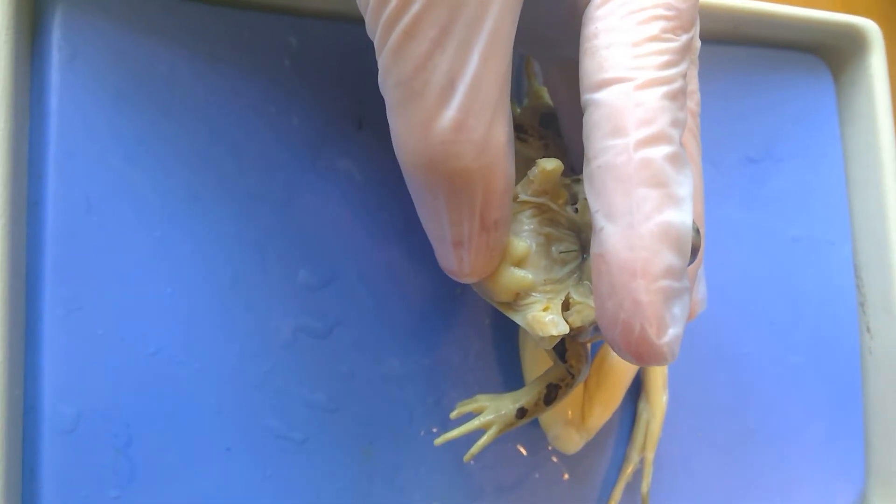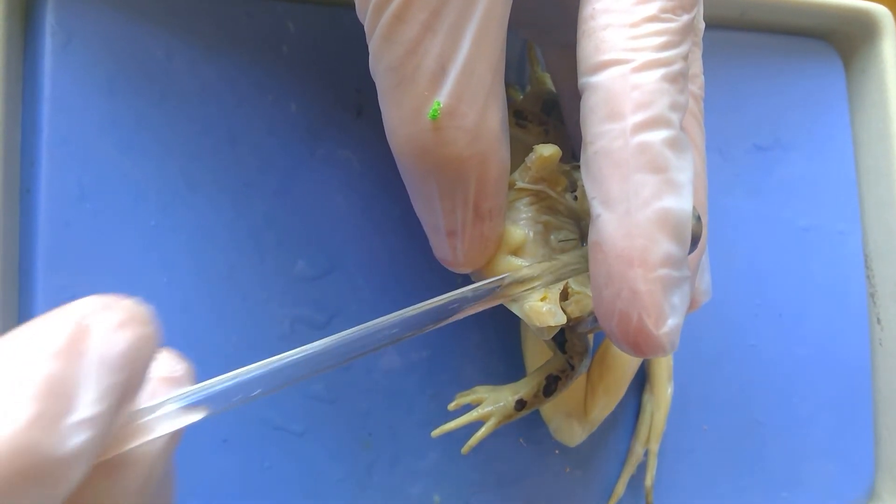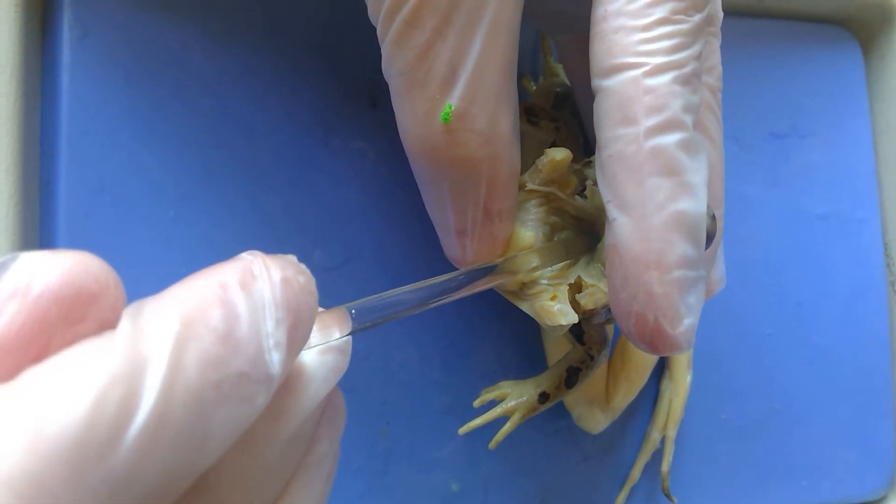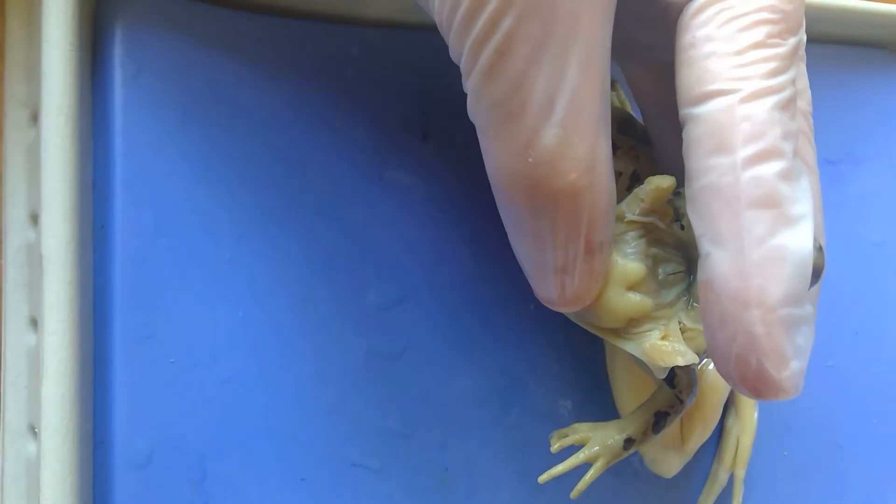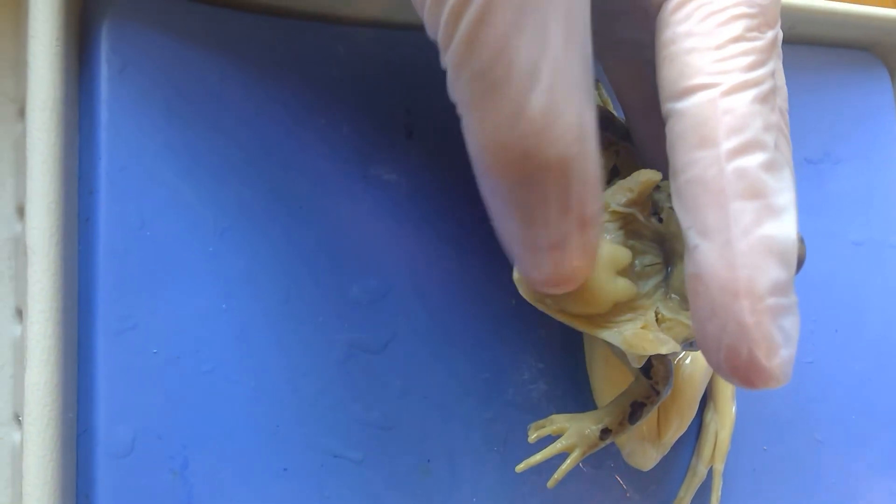And then this one right here is called the gullet. And it can open up pretty wide. So, that should give you a clue as to which one it uses to swallow food and which one it uses to breathe air.